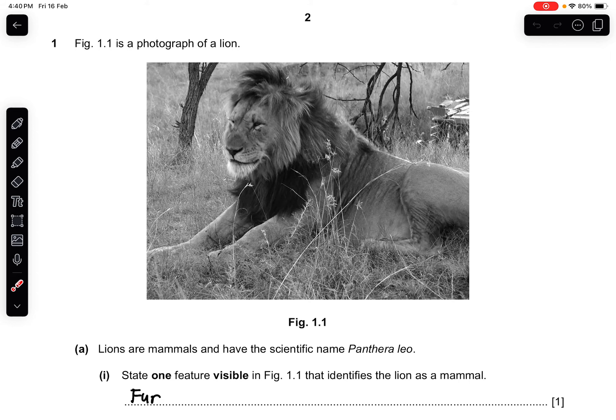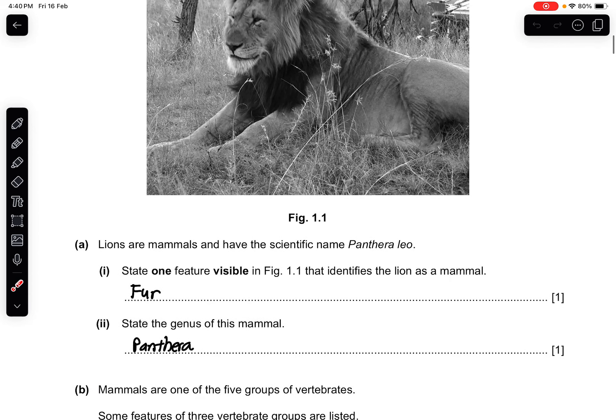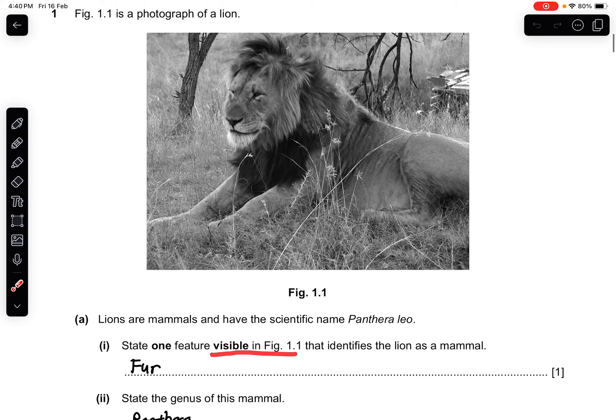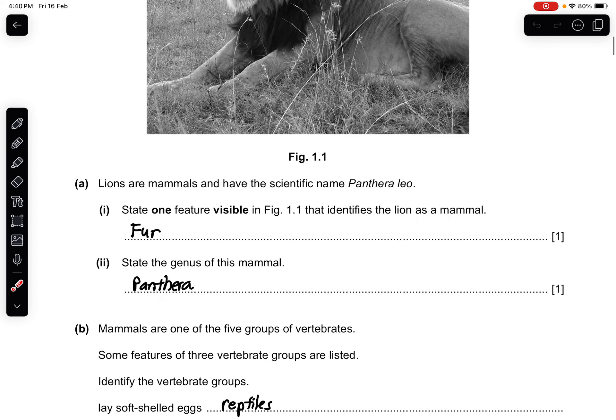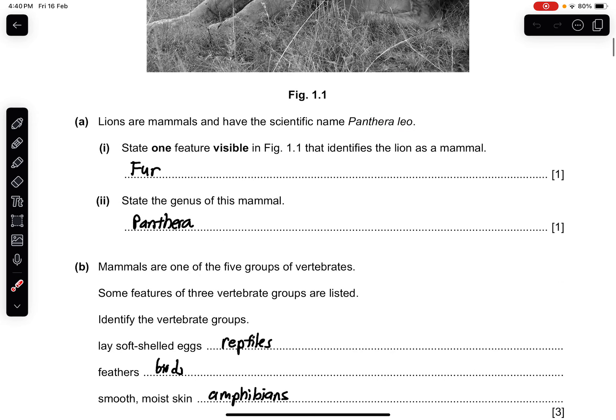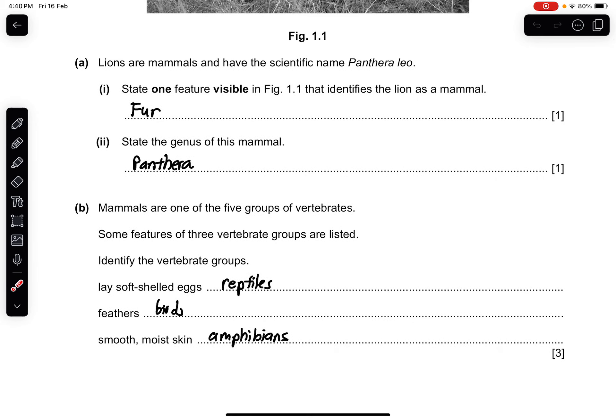Let's start with the first question. Figure 1.1 is a photograph of a lion. Part A: Lions are mammals and have the scientific name Panthera leo. State one feature visible in Figure 1.1 that identifies the lion as a mammal. The most obvious feature you can see is the fur or the hair. Part 2: State the genus of this mammal. The genus is Panthera.